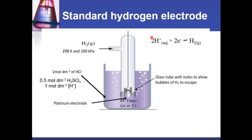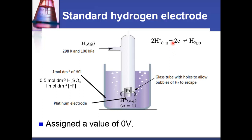This equation is the reduction equation — the H⁺ is being reduced. This equation depends on what you're connecting the electrode to, and we'll look at that later. The last point: the standard hydrogen electrode is assigned a value of 0 volts, so every other half cell is compared to it.